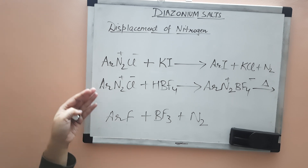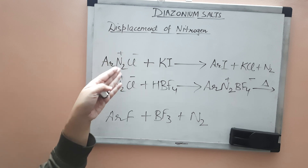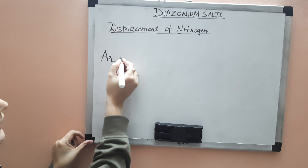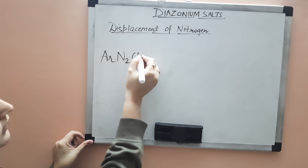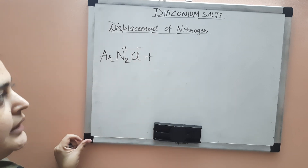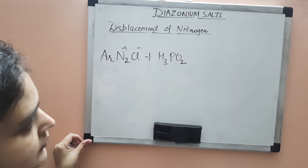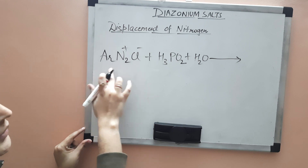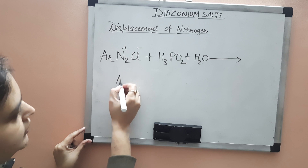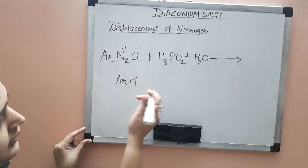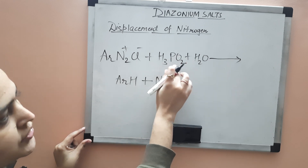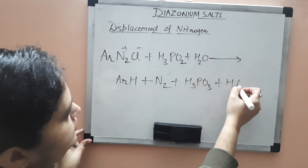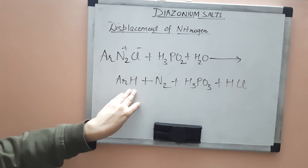Now we will look at how to introduce hydrogen into the diazonium salt to remove the nitrogen. For that, take your diazonium salt ArN2+Cl- and treat it with a mild reducing agent like hypophosphorous acid, H3PO2, and water. You will get your arene ArH — hydrogen is introduced. N2 is released, H3PO2 is oxidized to H3PO3 (phosphorous acid), and HCl is also formed.